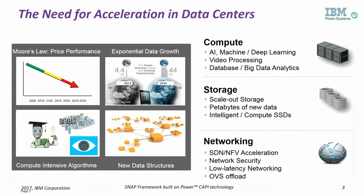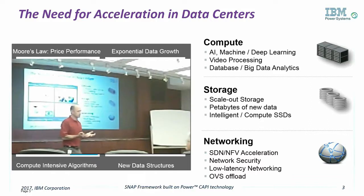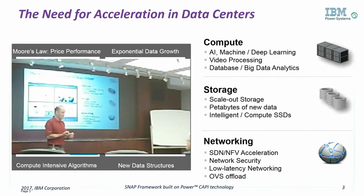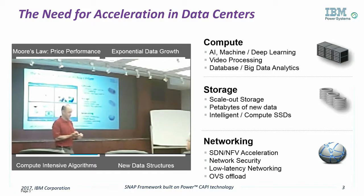The era of heterogeneous computing is here, and our Power servers support this new paradigm. We have this great infrastructure, second to none, with the original CAPI and the NVLink for GPUs. Power9 will have NVLink 2.0 and CAPI 2.0 over PCIe Gen4, which the Mellanox CX5 chip has taken advantage of. And then we have OpenCAPI coming.